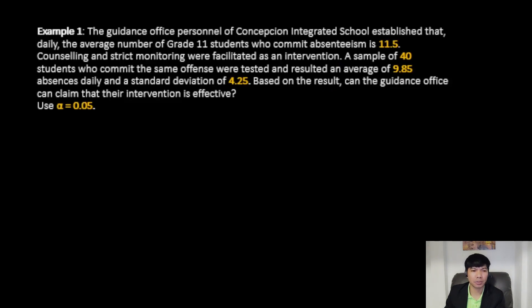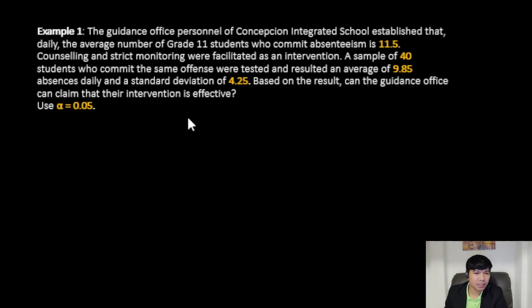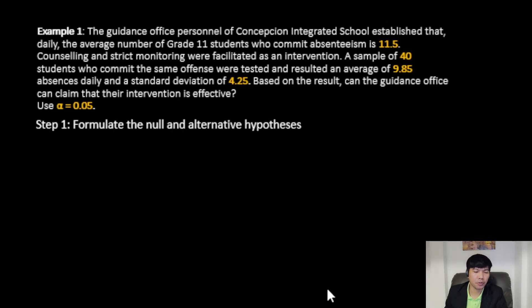For example number one: the guidance office of Concepcion Integrated School established that the average number of grade 11 students who commit absenteeism daily is 11.5. After counseling and strict monitoring were implemented as an intervention, a sample of 40 students resulted in an average of 9.85 absences daily and a standard deviation of 4.25. Can the guidance office claim their intervention is effective? Use alpha equals 0.05. Step 1: formulate the null and alternative hypothesis. The null hypothesis is mu equals 11.5 (no change), and the alternative hypothesis is mu less than 11.5 (intervention is effective).